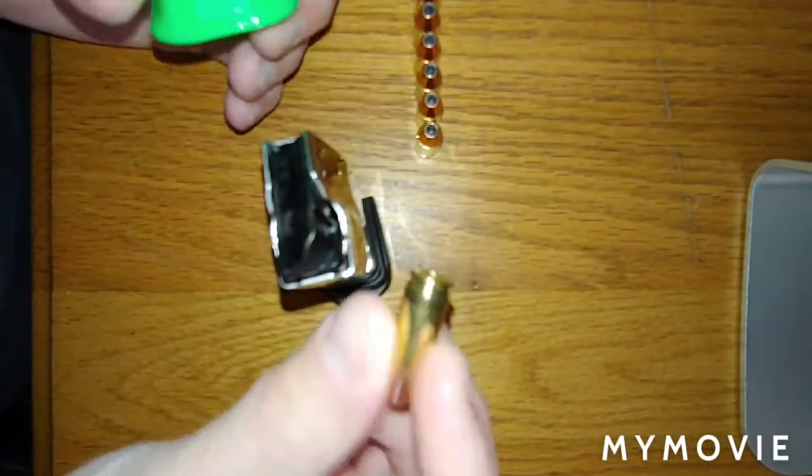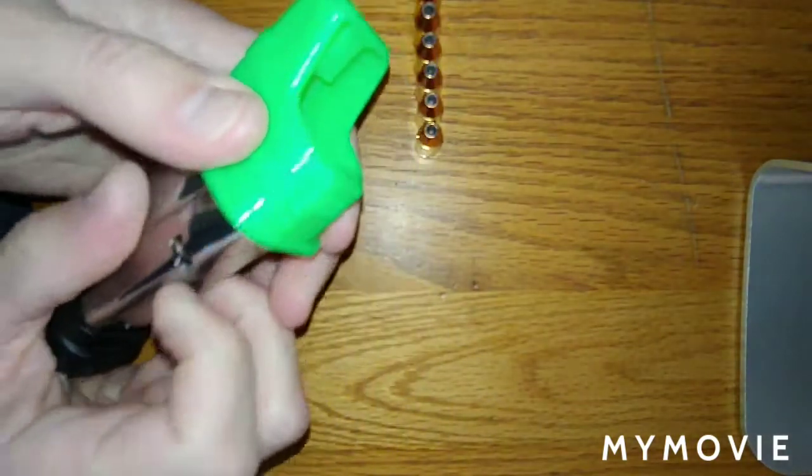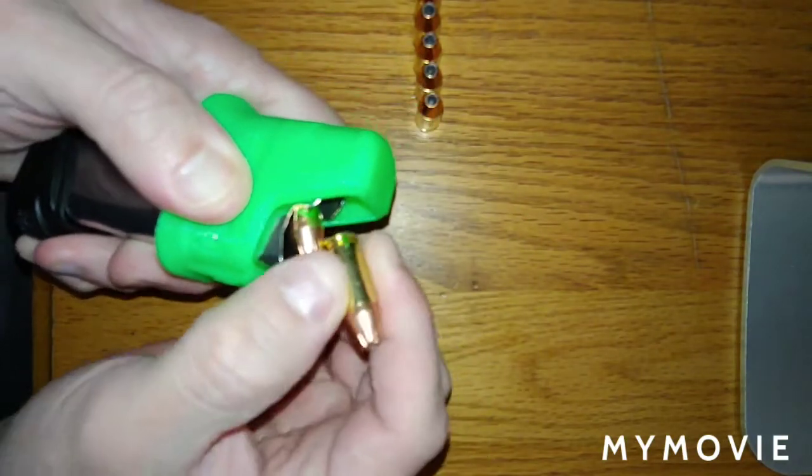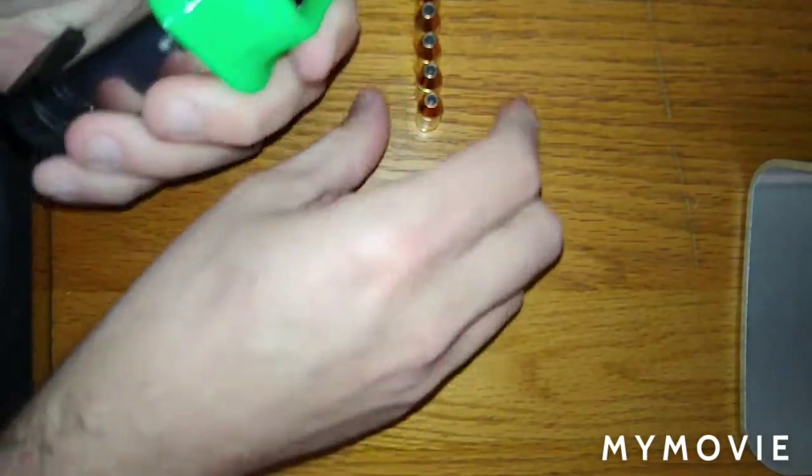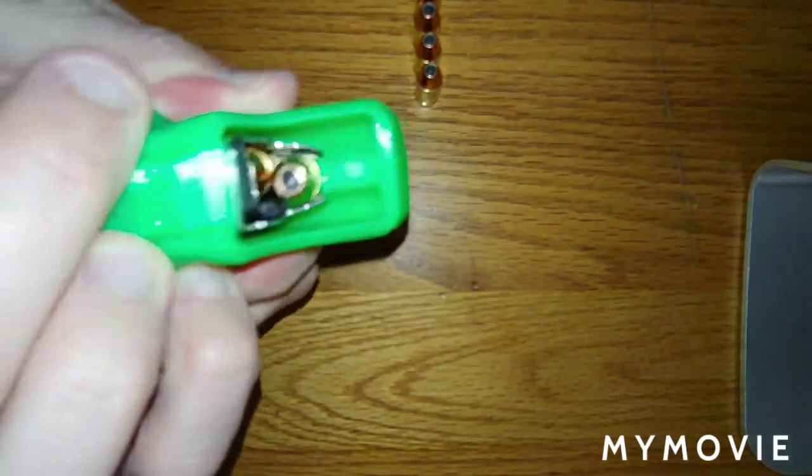Then you get a round and you put it into the magazine by hand and then you put the little green fella back over it. That really helps. And then you push it down with the little green thing and you just pop in the round. And it's super easy and then you just continue doing that.